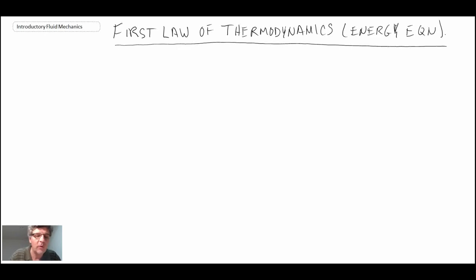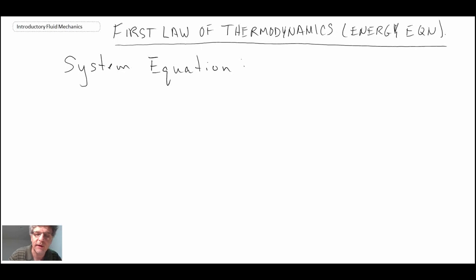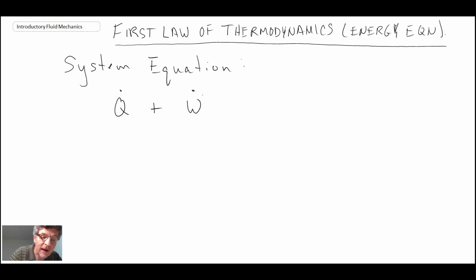We'll begin with the system equation. Remember, these are equations that apply to a fixed mass. What we will need to do is rewrite that equation in the control volume formulation that applies to mass moving through our control volume. The first law of thermodynamics: we have heat transfer, we have work, and that is equal to the time rate of change of energy within our system — a system with fixed mass.